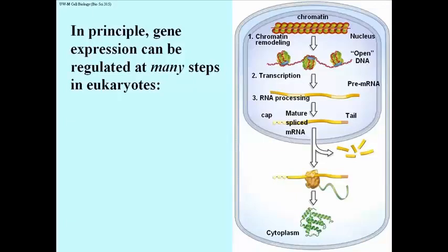Molecules in the cell, or in the nucleus, that speed up or slow down addition of a tail, or increase the rate of capping, and so on — capping, remember, is one of these processes thought to enable the exit of a mature message out of the nucleus and into the cytoplasm where it will be used. So if you could control that, you would control the amount of final protein product that this gene could make.